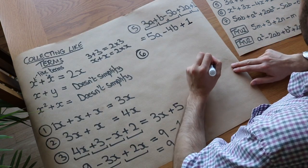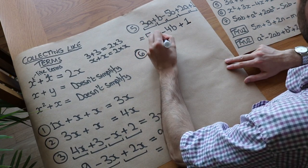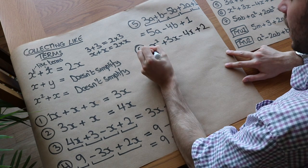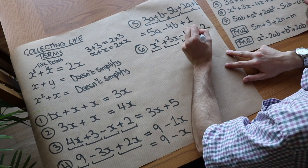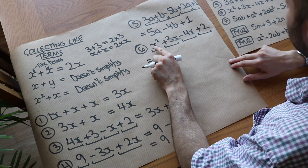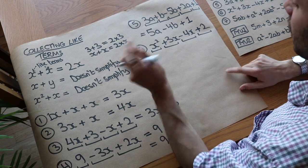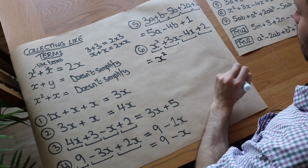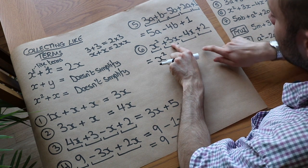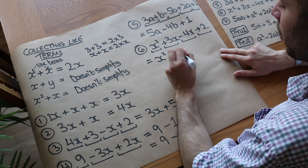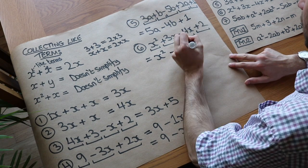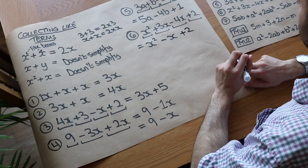Question 6: we've got x squared plus 3x minus 4x plus 2. Underlining: x squared, plus 3x, minus 4x, and plus 2. The x squared term — are there any other x squared terms? No, there aren't; these are x terms, not x squared terms, so x squared stays on its own. The 3x collects with the minus 4x — they're both x terms — and 3 minus 4 is minus 1, so we write minus x. Finally the constant term plus 2 stays on its own. So it simplifies to x squared minus x plus 2.